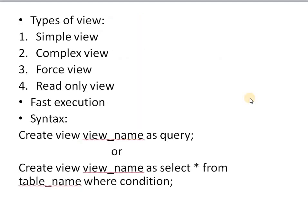There are four types of views. The first is a simple view. A simple view is created by using only one base table. If we create a view on a single table present in your database, that view is known as a simple view — it uses only one table. The second type is a complex view, which is the opposite of a simple view. A complex view is created by using more than one table. If we use more than one table to create a view, that view is known as a complex view.